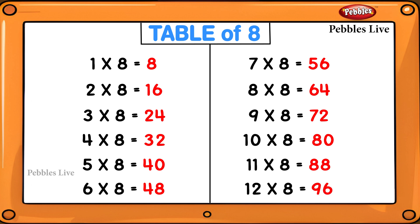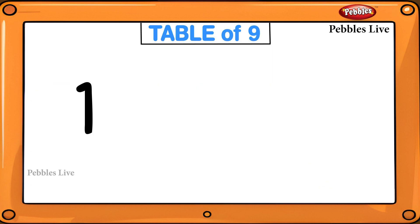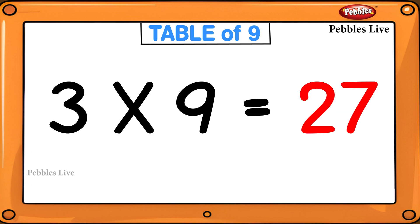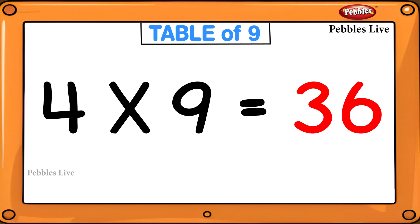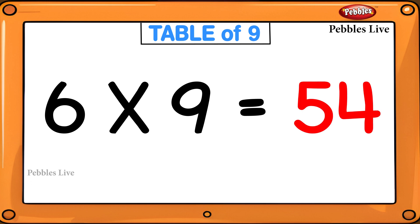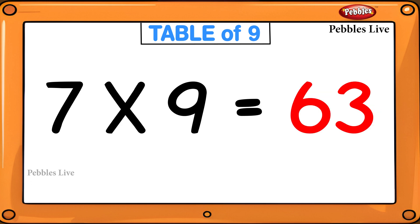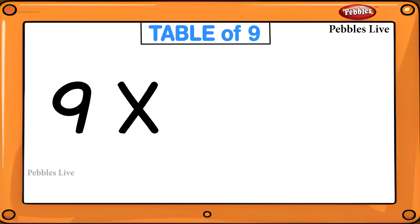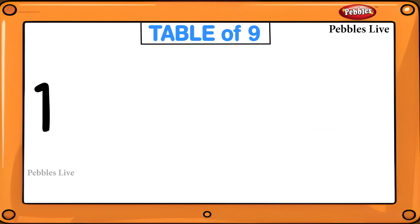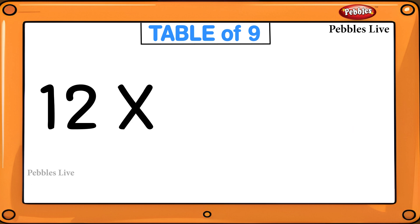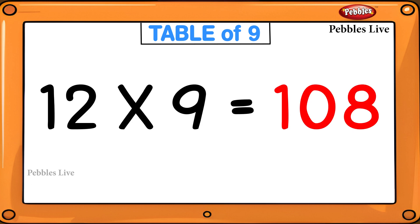Table of 9: 1 nines are 9, 2 nines are 18, 3 nines are 27, 4 nines are 36, 5 nines are 45, 6 nines are 54, 7 nines are 63, 8 nines are 72, 9 nines are 81, 10 nines are 90, 11 nines are 99, 12 nines are 108.